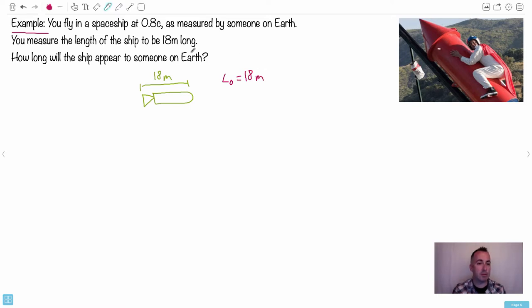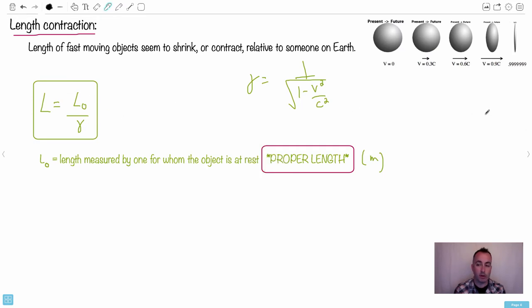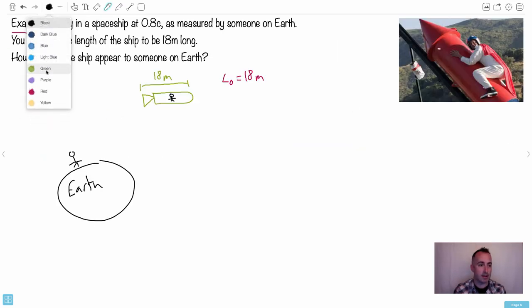And we're going to say, well, how long will the ship appear to someone on Earth? So again, now we have a situation where someone's watching you from Earth, and they're watching you. So how long will you appear to them? So in other words, we're going to use this equation right here. L is L0 over gamma. So let's maybe write that down. That tells the examiner you know what you're doing. So if we do this, then what are we trying to solve for? We're trying to find L, the length that someone on Earth is going to see you appear to be.